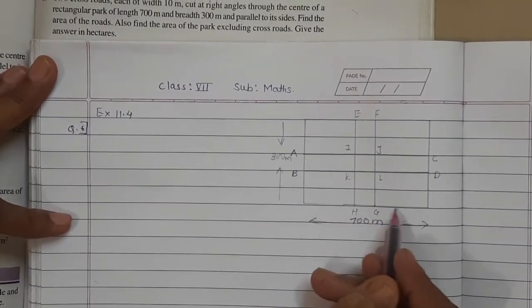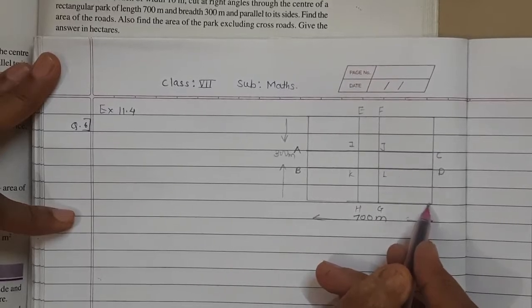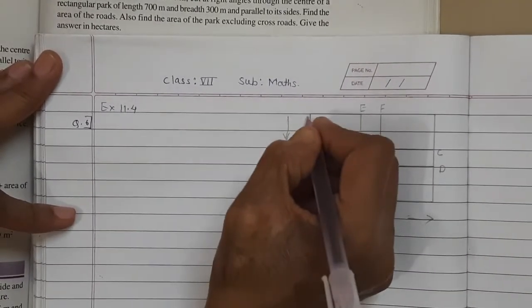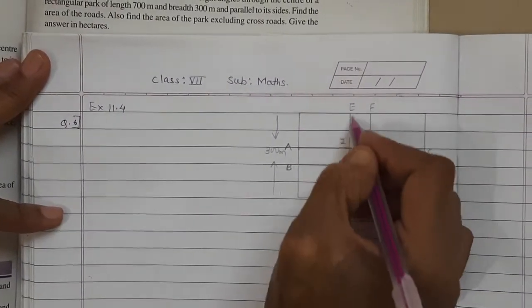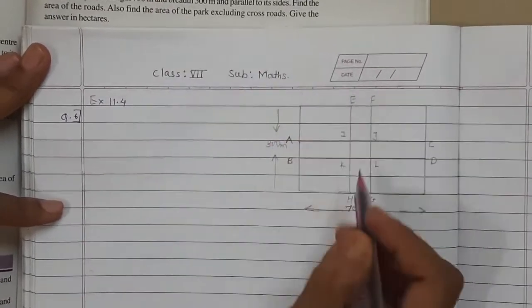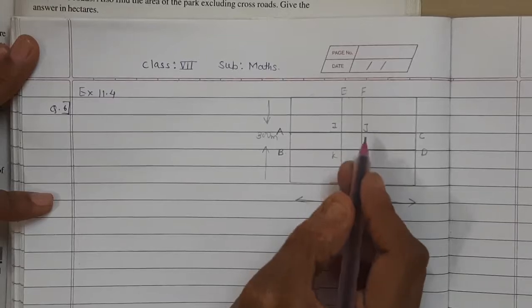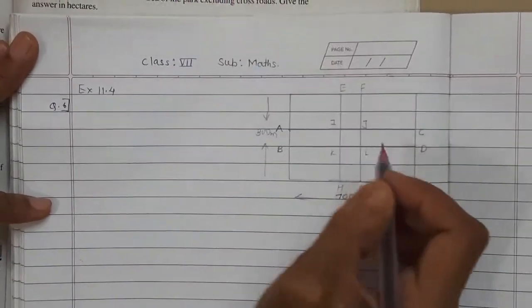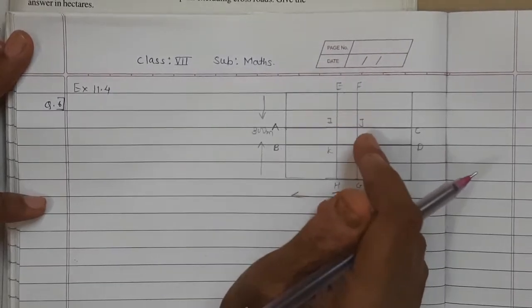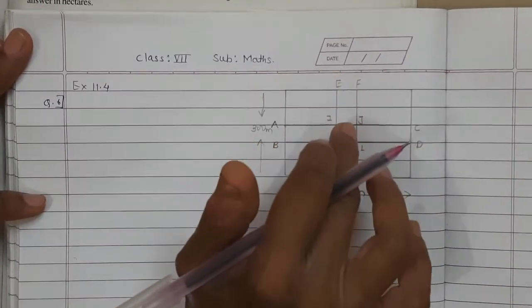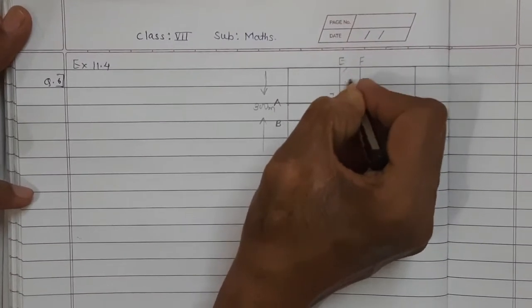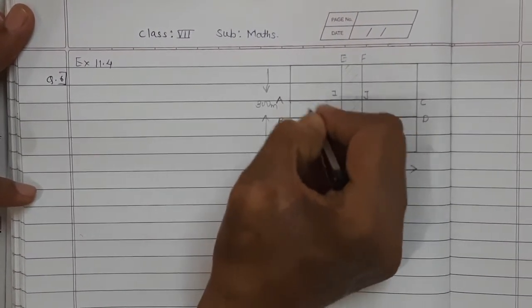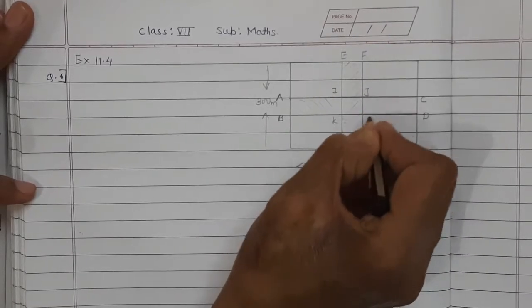This is the length of rectangular park 700 meter and breadth is 300 meter and two cross roads. See these are the two cross roads, width is given 10 meter, cut at right angles through the center of the rectangular park. We have to find the area of the road — this part we have to find.